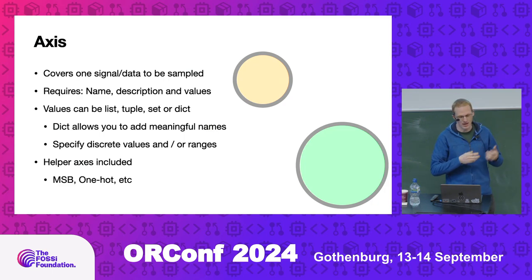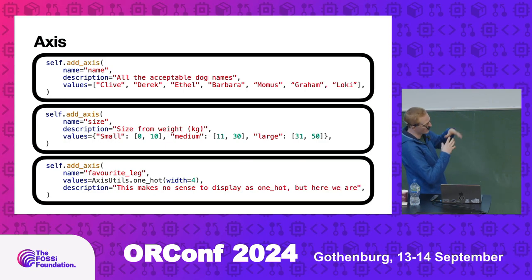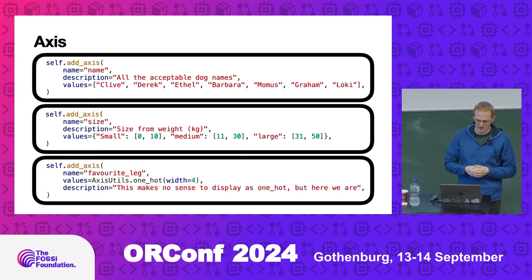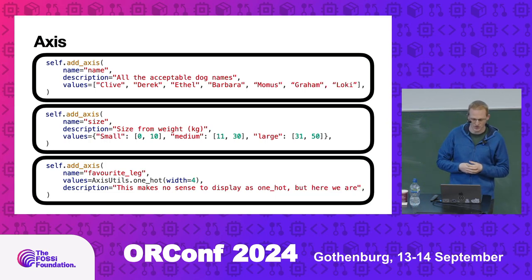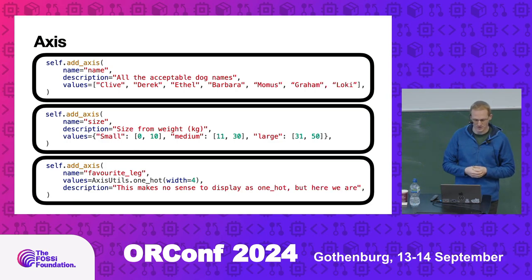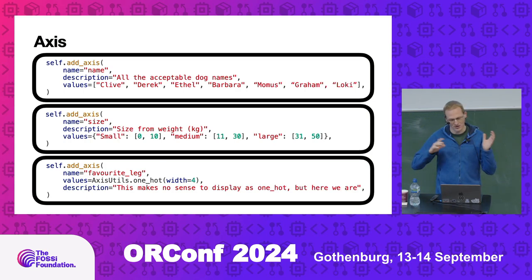We've also built some helper ones, so you can say most significant bit axis, or a one hot of 4 bits, and so forth. Here you can see some examples of adding axes — this is within the cover point setup phase, which I'll come to next. You can specify name and description, and the top example is just a list of names — this could be instruction names if you're doing a CPU. The second one is a list of ranges, and you can chunk in the integer that you get out of your design and it will know which one that maps to. At the bottom is an example of our one hot one. The documentation on the GitHub page has a large example — it's all pet-based, so there's a lot of dogs in this.